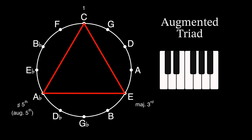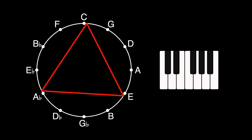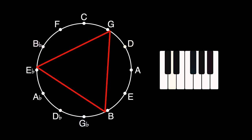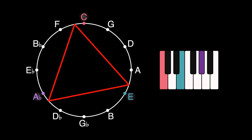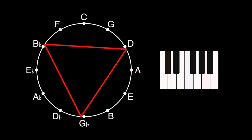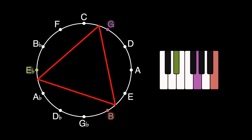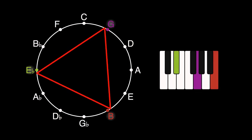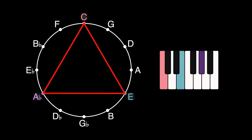So when we rotate this triangle, we'll just get a series of augmented chords. If we rotate the triangle clockwise instead, we get the same chords, just played in the opposite order, which is true for all of the polygons we'll be rotating.